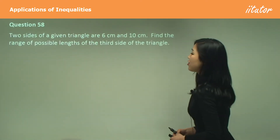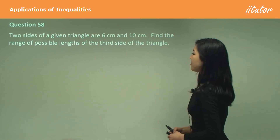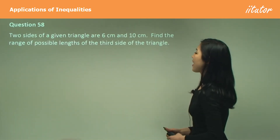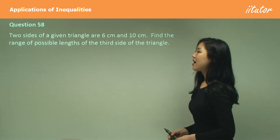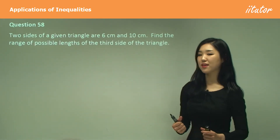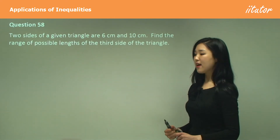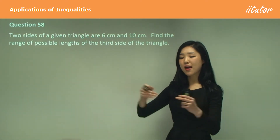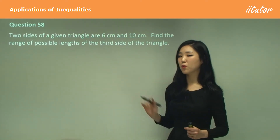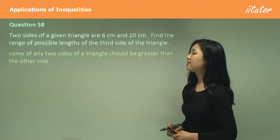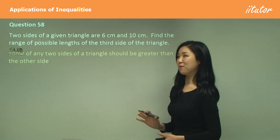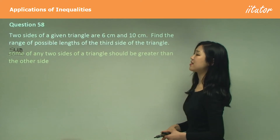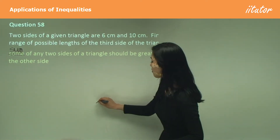Question 58: two sides of a triangle are 6 and 10 centimeters — find the range of possible lengths of the third side. The key rule is: the sum of any two sides of a triangle must be greater than the third side.